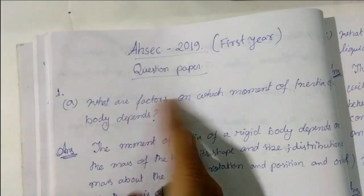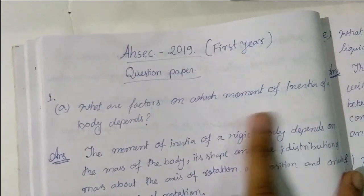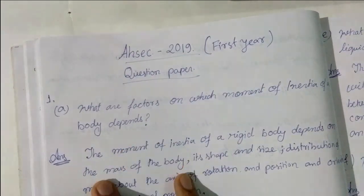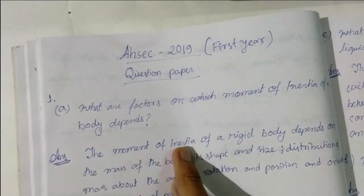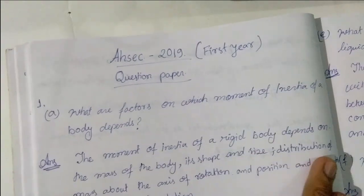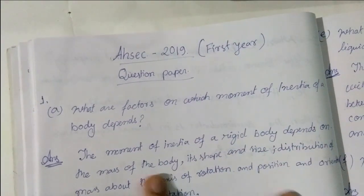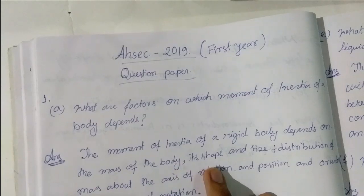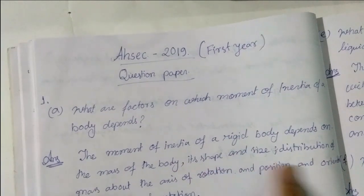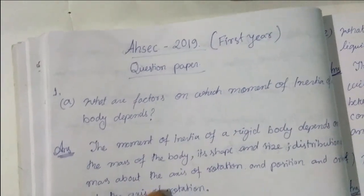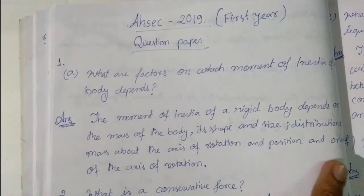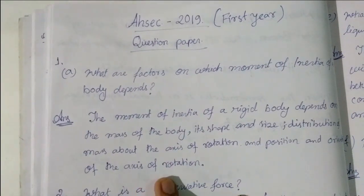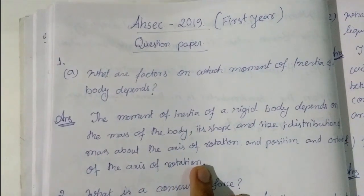First question: What are the factors on which the moment of inertia of a body depends? The answer is the moment of inertia of a rigid body depends on the mass of the body, its shape and size, distribution of the mass about the axis of rotation, and position and orientation of the axis of rotation.